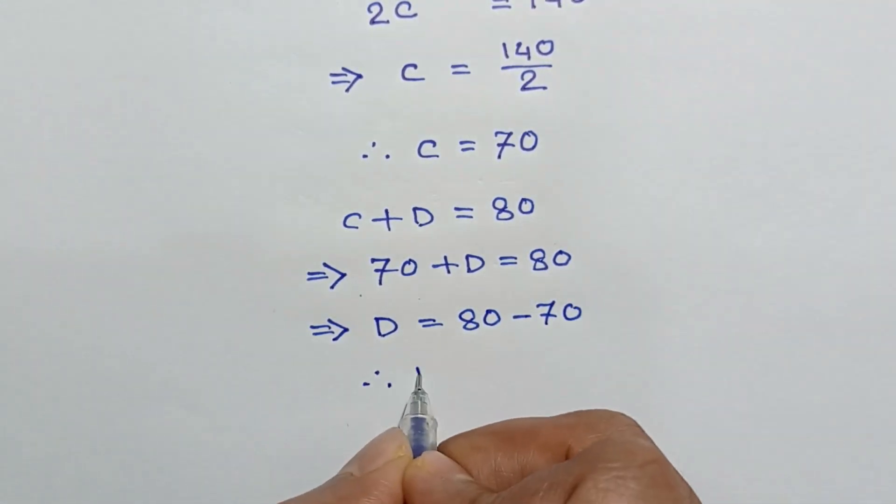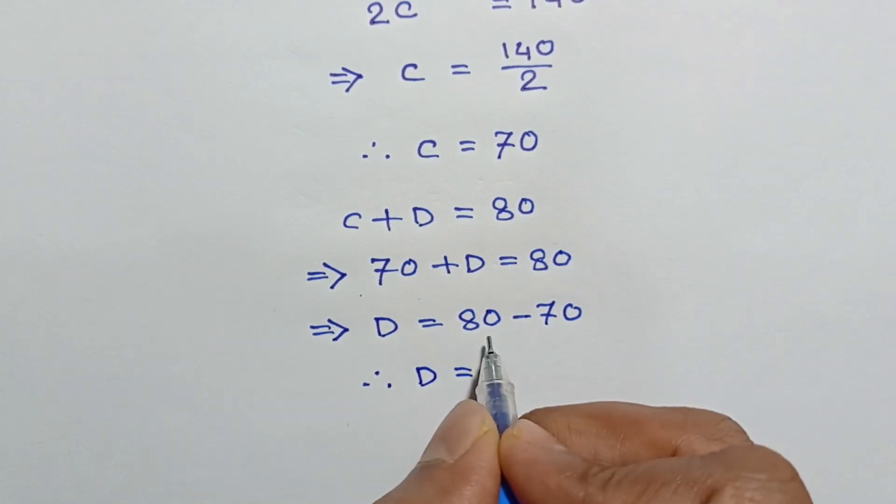So the value of D is equal to 80 minus 70, which is equal to 10.